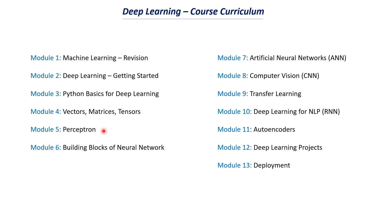The sixth module is a very important one where we will be discussing the building blocks of neural networks, like activation functions, gradient descent, stochastic gradient descent, backpropagation, and so on. All these concepts will help us understand the more advanced concepts like artificial neural networks, CNNs, and RNNs better.